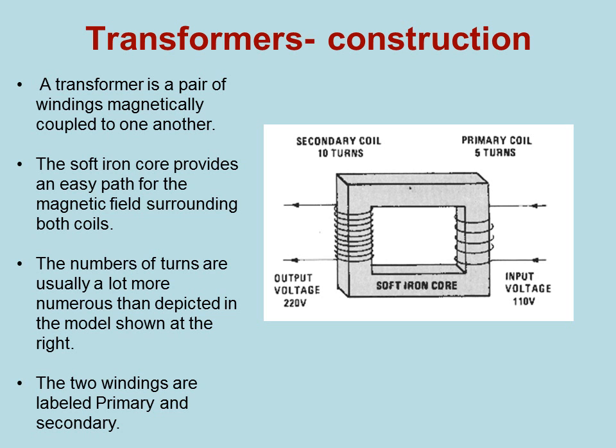Transformers are a pair of windings magnetically coupled to one another. The soft iron core provides an easy path for the magnetic field surrounding both coils. The numbers of turns are usually a lot more numerous than depicted here. The two windings are labeled the primary and the secondary.